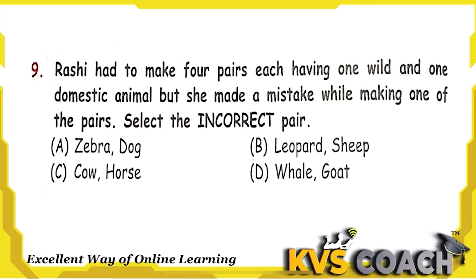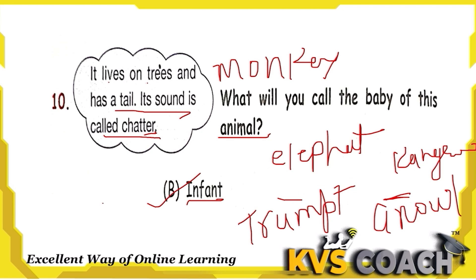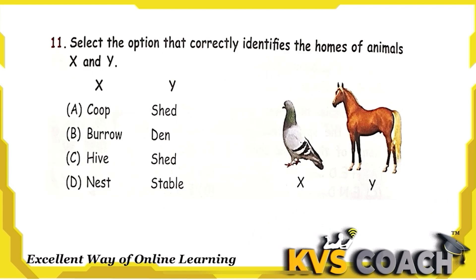Question 9: Rashi had to make four pairs, each having one wild and one domestic animal, but made one mistake. Let's check: zebra is a wild animal and dog is a domestic animal.